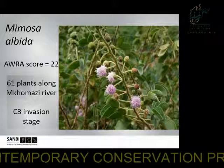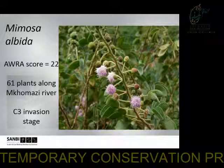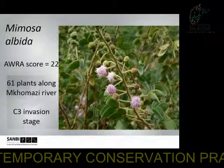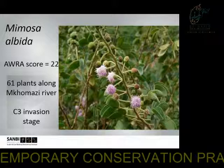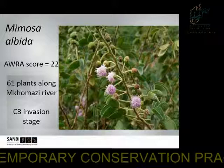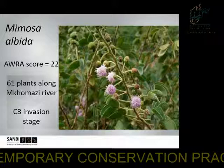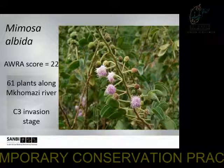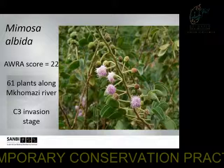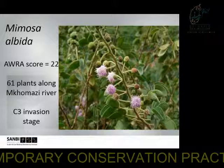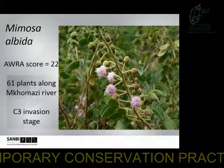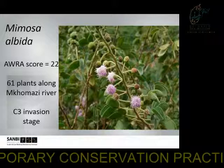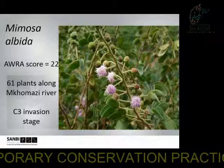The third plant is from the Fabaceae family: Mimosa albida. Like other Mimosa species — Mimosa pigra and pudica — it also produces conspicuous pink capitate flowers, and it is a spiny plant with sensitive leaves that close when touched. The weed risk assessment score is the highest, at 22, and 61 plants were found along the Mkomazi River along a 1.5 km stretch near Richmond in the southern midlands. We assessed this one as being at the C3 invasion stage, with a self-sustaining population outside of cultivation and reproducing.